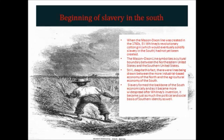Eli Whitney's revolutionary cotton gin, which would eventually solidify slavery in the South, had not yet been created. The Mason-Dixon Line symbolizes a cultural boundary between the Northeastern United States and the Southern United States. Still, despite this fact, there were lines being drawn between the more industrial-based economy of the North and the agricultural economy of the South.